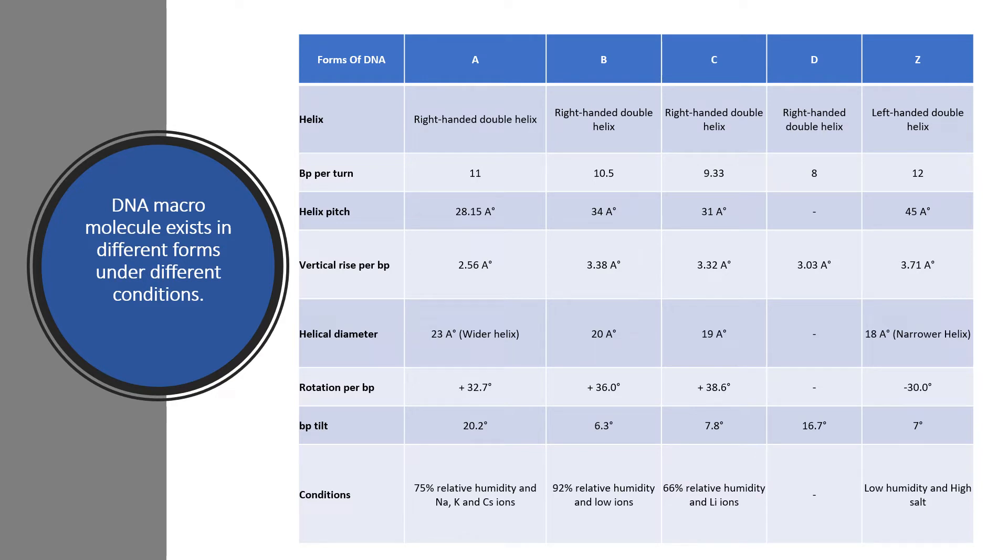Base pairs in one turn is 11 in A DNA, 10.5 in B DNA, 9.33 in C DNA, 8 in D DNA and 12 in Z DNA.